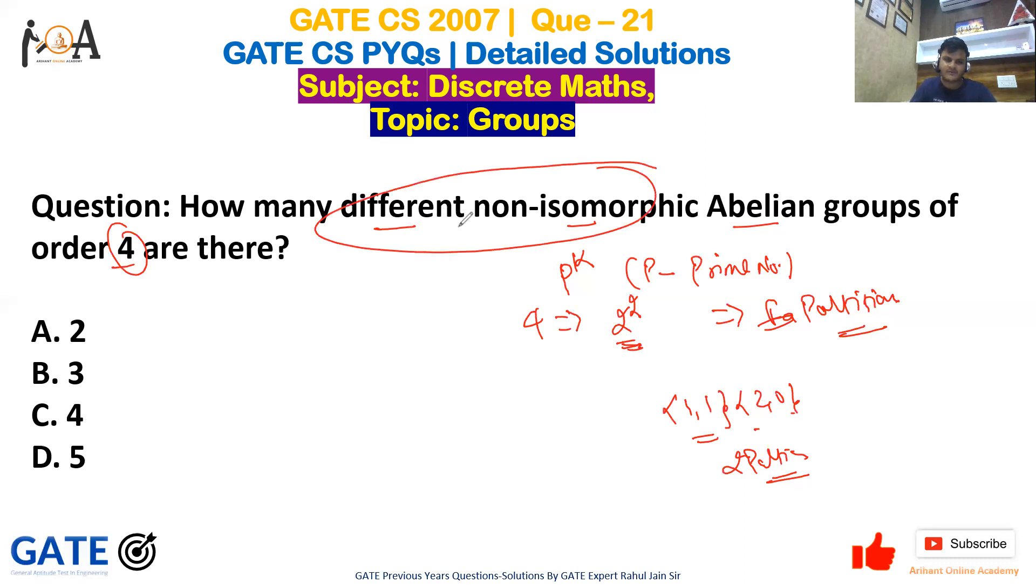So we have only two partitions. If we have two partitions, then different non-isomorphic forms are option A, that is 2. So I hope this question is very easy and all of you have got the answer clearly. Thank you so much guys, have a very nice day. Do subscribe to our YouTube channel, press the bell icon and like the video. Thank you so much.